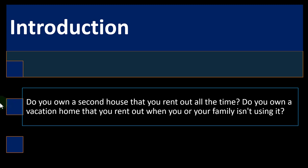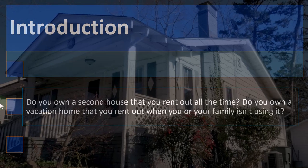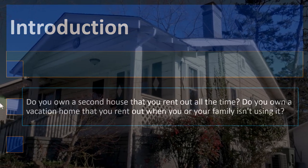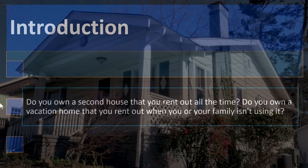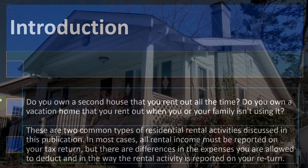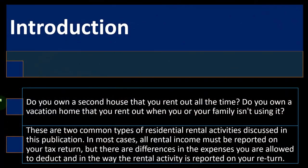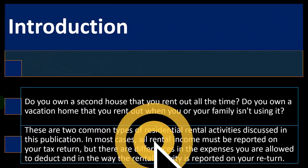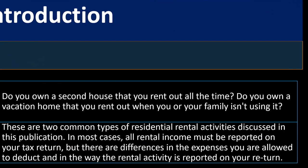Introduction: Do you own a second house that you rent out all the time? Do you own a vacation home that you rent out when you or your family isn't using it? These are two common types of residential rental activities discussed in this publication. In most cases, all rental income must be reported on your tax return — the general rule is that everything is income unless there's a specific exception.